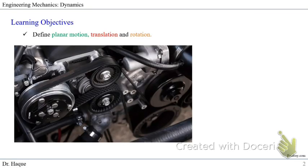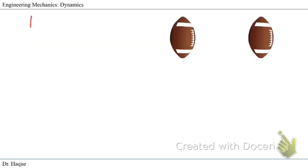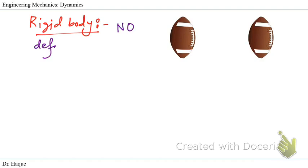Let's define what we mean by a rigid body. A rigid body is a body that, when moving, has no deformation — the body will not deform. For rigid body motion, no matter what force is acting on the body, the body will not deform. The force acts to produce motion but does not deform the body.